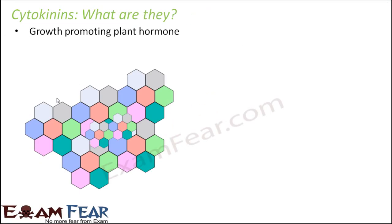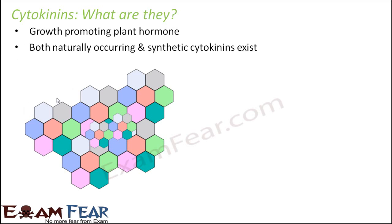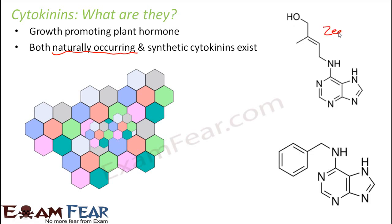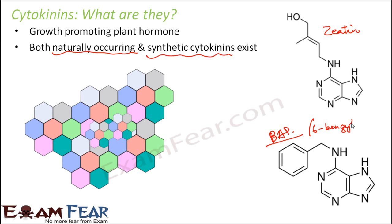So what are cytokinins? They are growth-promoting plant hormones. Both naturally occurring as well as synthetic cytokinins exist. An example of a naturally occurring cytokinin would be zeatin, whose structure looks somewhat like adenine. If you talk about synthetic cytokinins, an example would be BAP — 6-benzylaminopurine. This is a synthetic cytokinin, meaning it is artificially prepared.